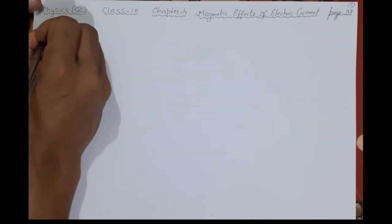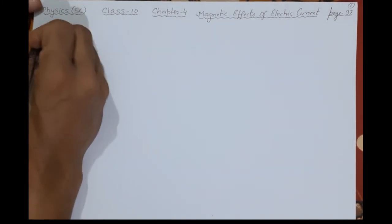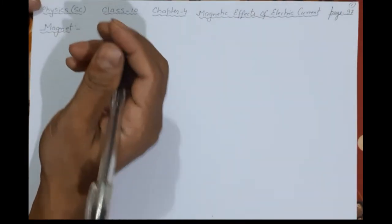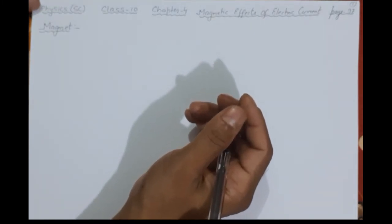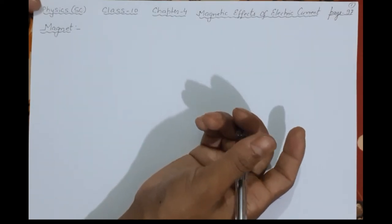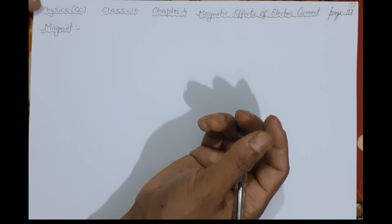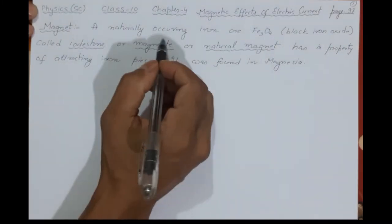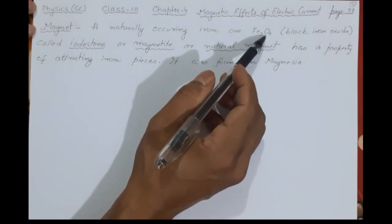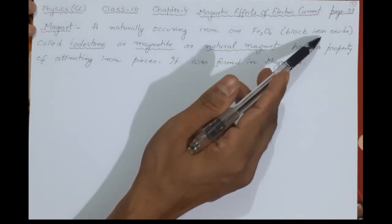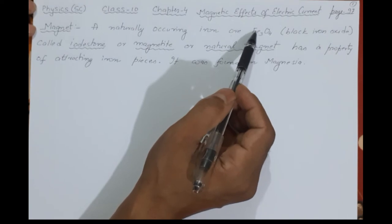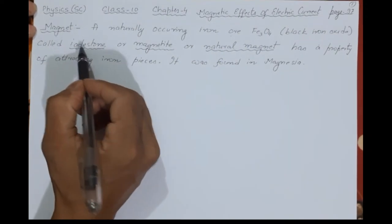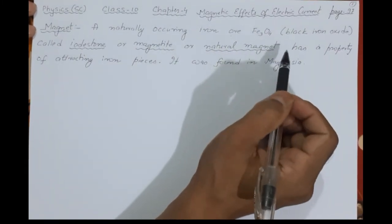The first topic to be covered is the magnet itself. You have seen a magnet when you were small — a small piece of magnet is very common; we have played with it and seen how it attracts small iron objects like blades or pins. A magnet is a naturally occurring iron ore with the formula Fe₃O₄ — it is black iron oxide, also called lodestone, magnetite, or simply the natural magnet.